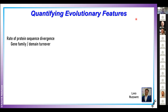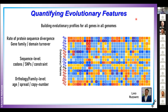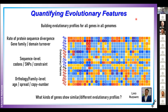Following on from that, not only looking at sequence constraint but also gene family and protein domain turnover rates and sequence evolutionary rates at the level of protein sequences. Bringing all of those together, we can combine evolutionary features focused on sequence changes and those focused on copy number changes, or the age since the last common ancestor where certain gene families emerged. We're trying to build what we call evolutionary profiles for all genes in all genomes, asking which kinds of genes show similar or different evolutionary trajectories — from ancient conserved stable to young dynamic and divergent.